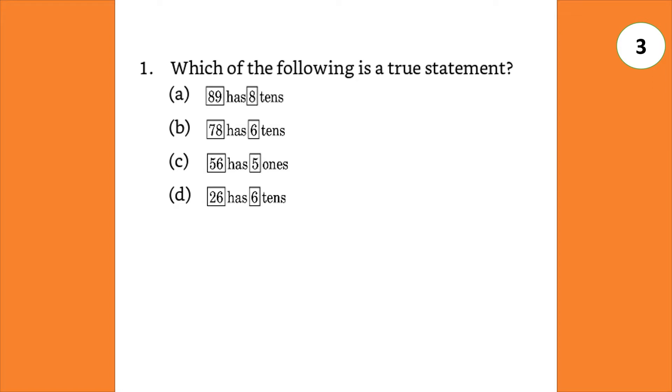Which of the following statement is true? 89 has 8 tens, 78 has 6 tens, 56 has 5 ones, 26 has 6 tens. Answer A, 89 has 8 tens.